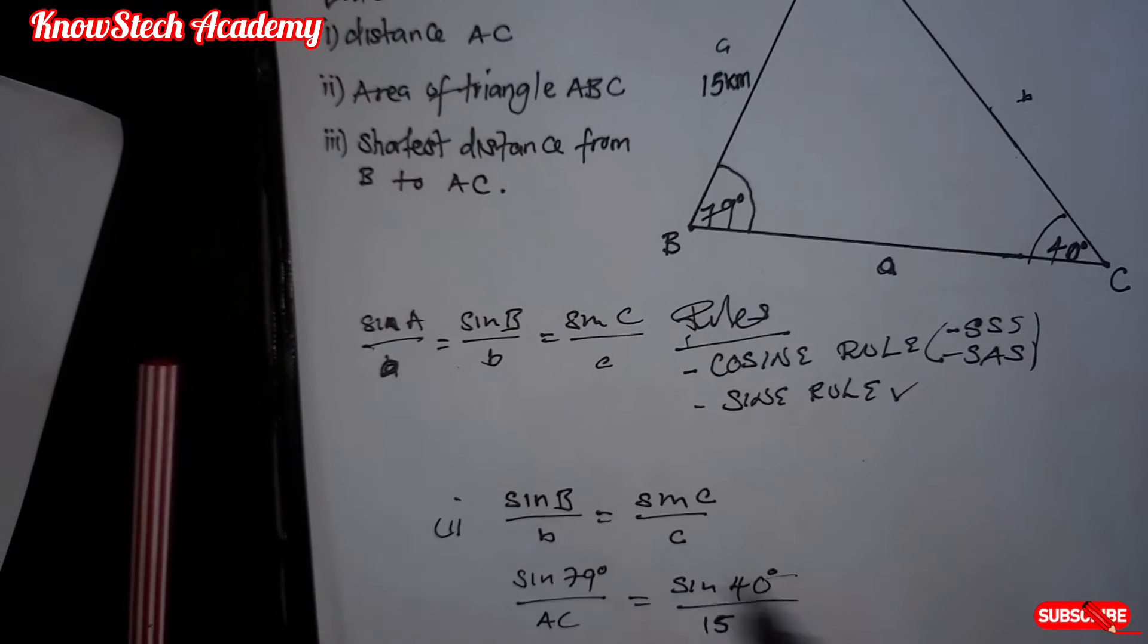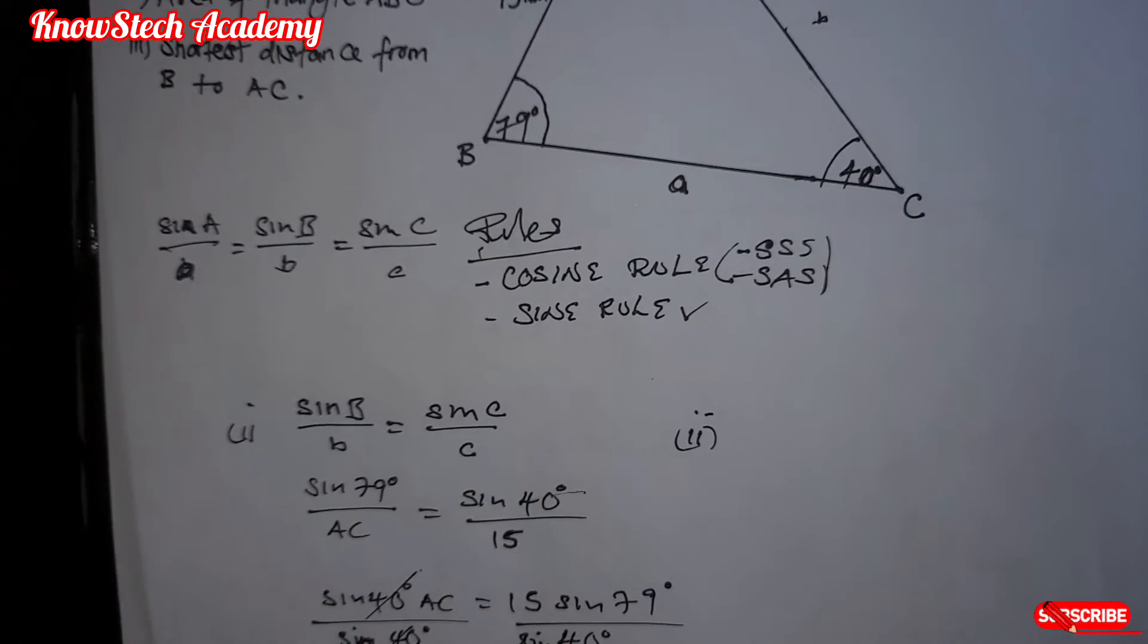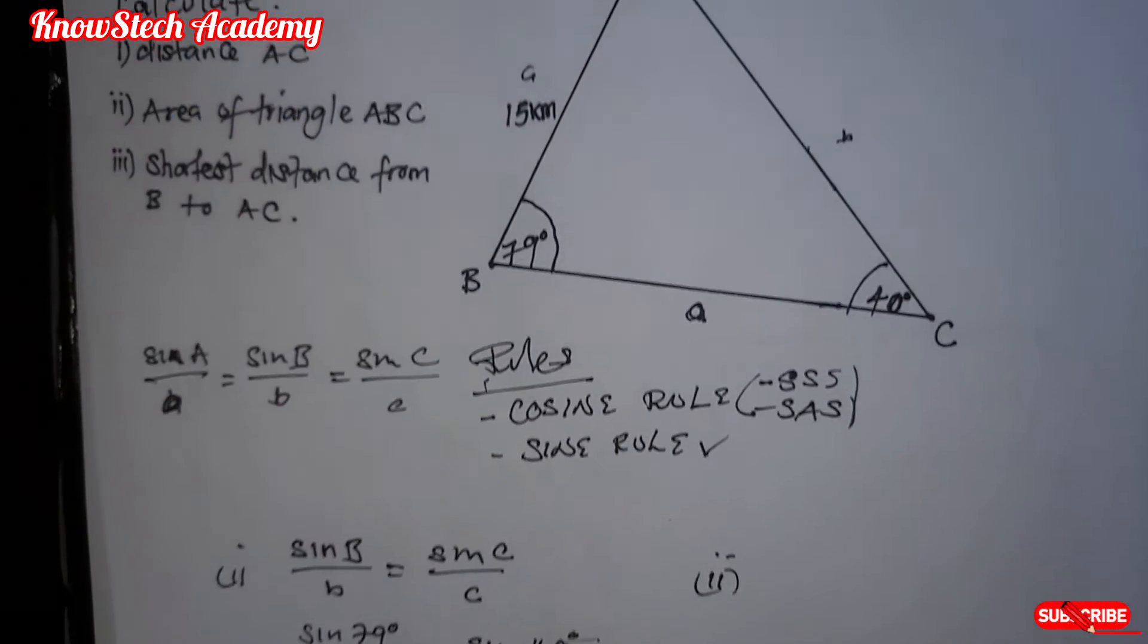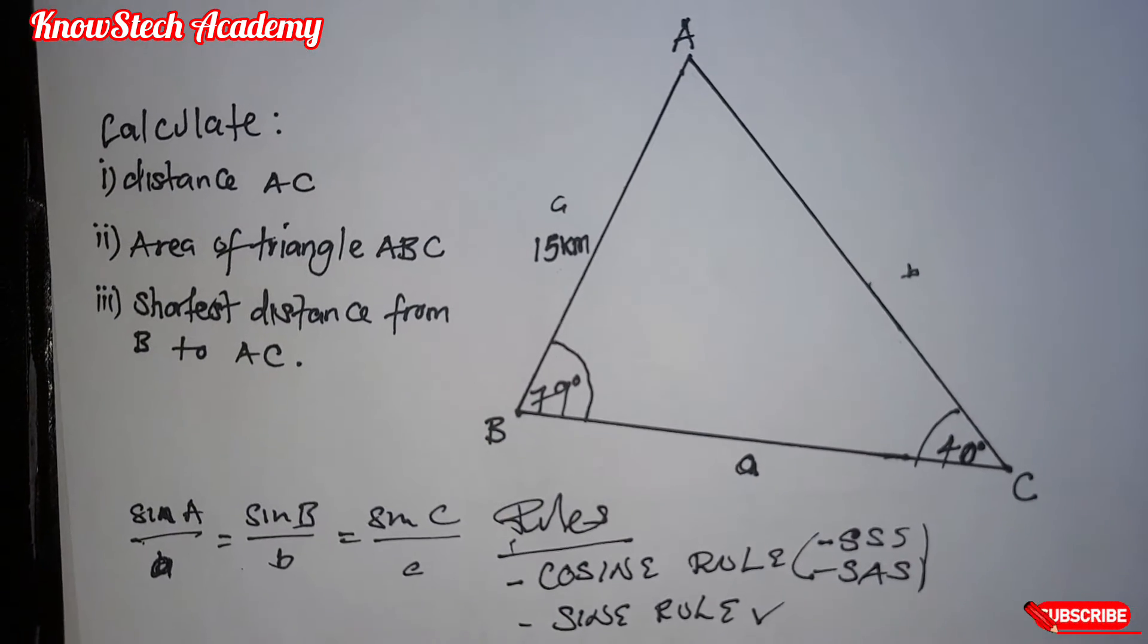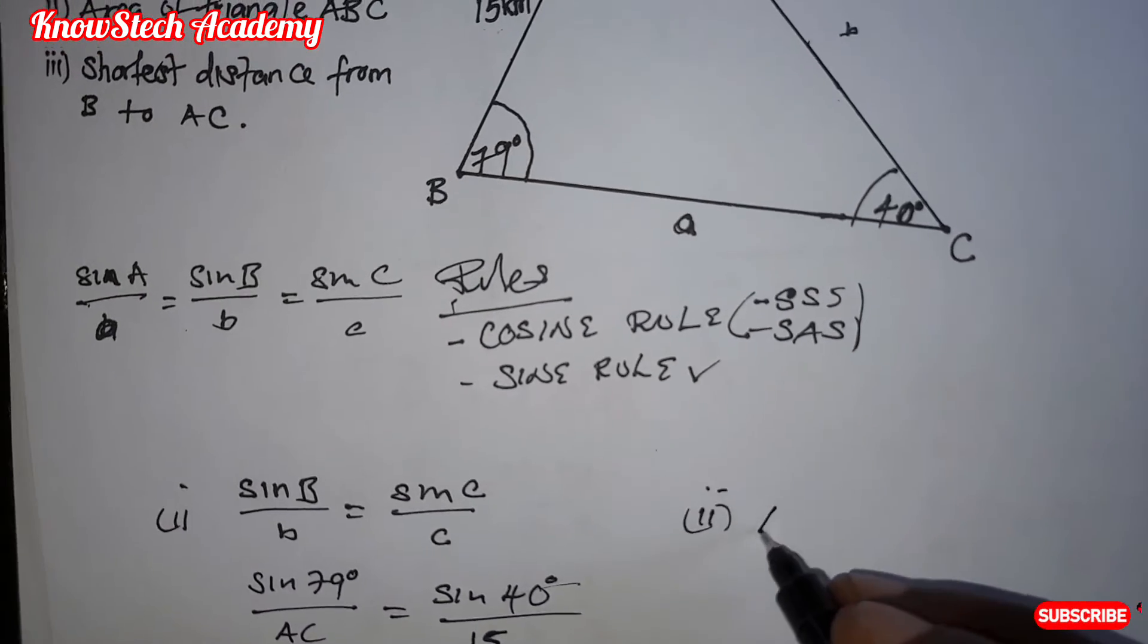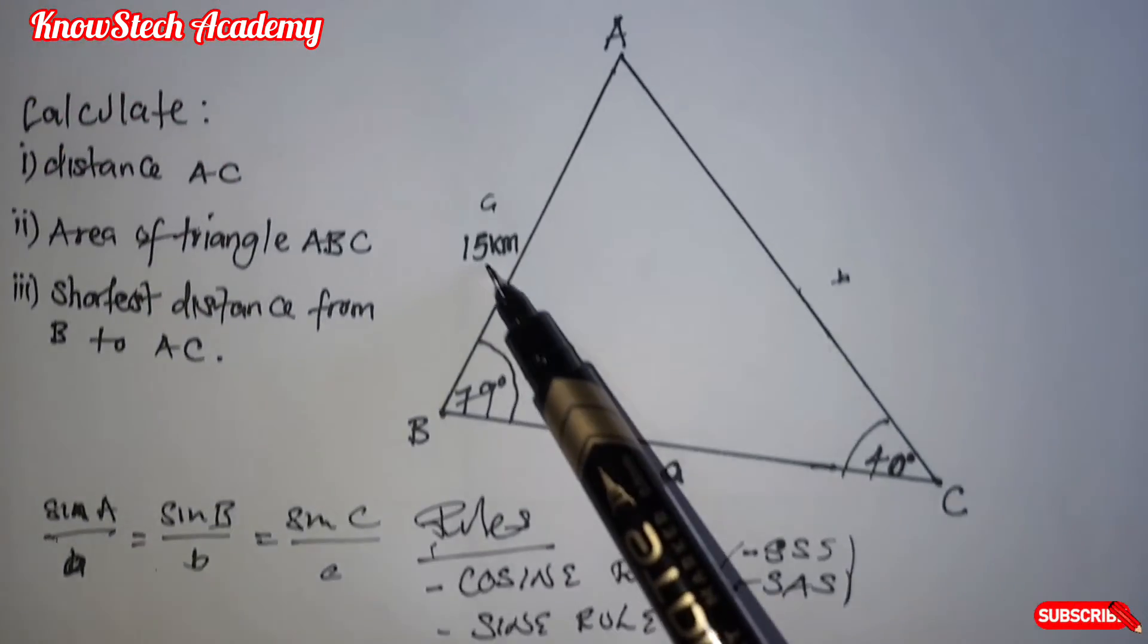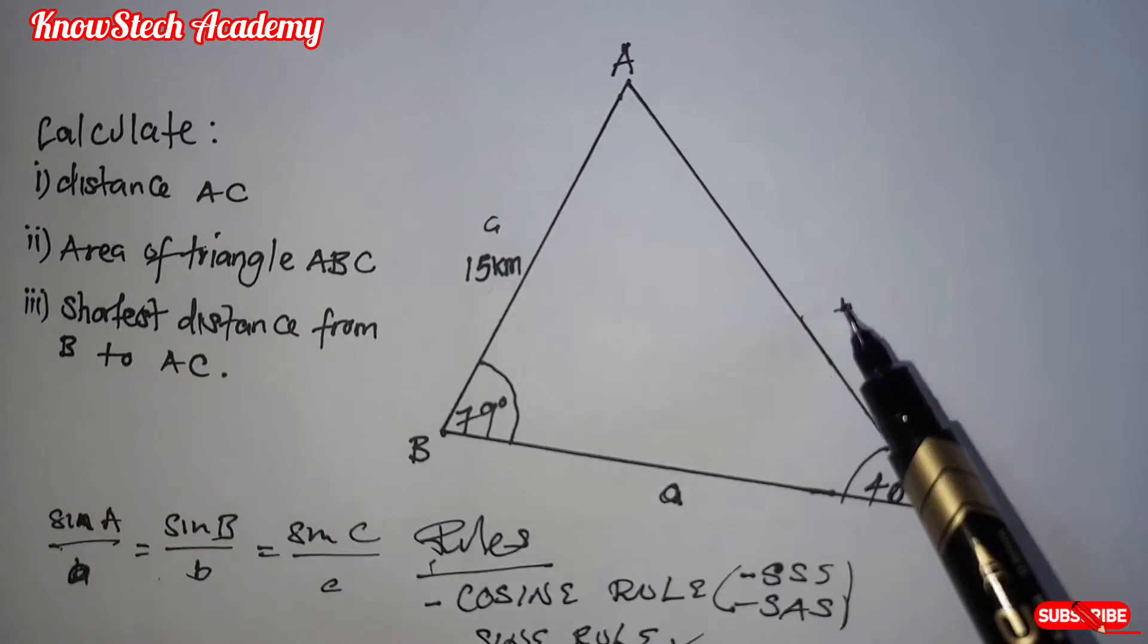This is question one. Now question two will be asking us to find area of triangle ABC. So to find the area of triangle ABC, we are going to use this formula. Area is equal to half. Now the two sides that are given, we have 15 and here we have 22.9.